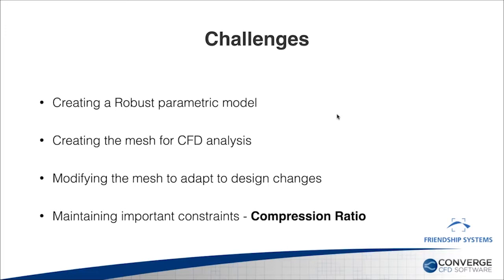For this piston bowl optimization problem, what are some of the challenges we need to be aware of? First, a robust parametric CAD model has to be created — this is where we rely upon CASES. Second, a valid mesh needs to be created for each valid design that gets generated — this is where we rely upon the automatic mesh generation capabilities of Converge. Also, when we change the piston bowl shape, the combustion chamber volume is going to change. To ensure the optimization study is valid, we need to keep the compression ratio constant.